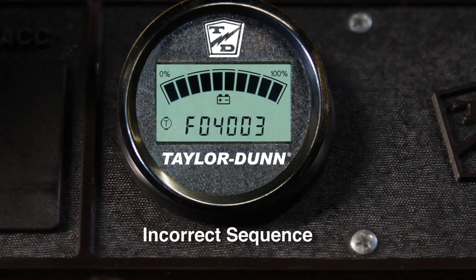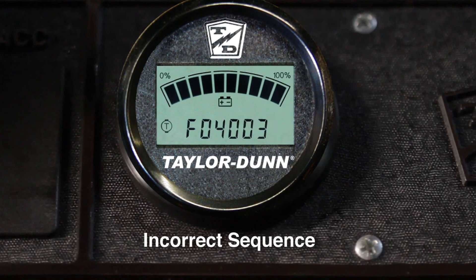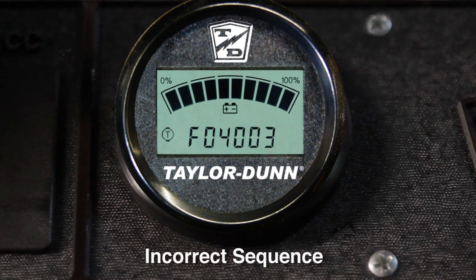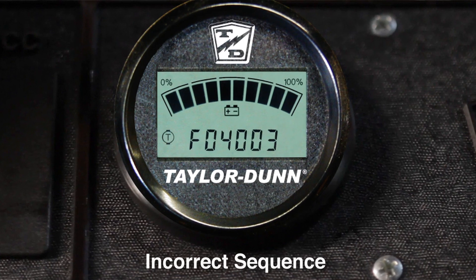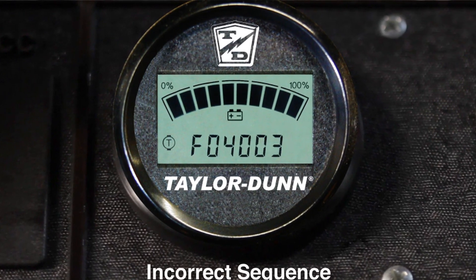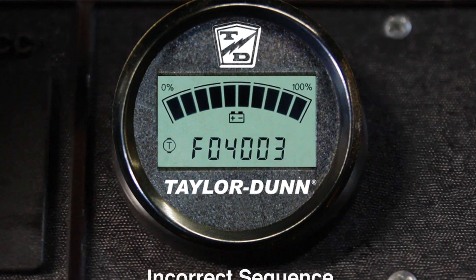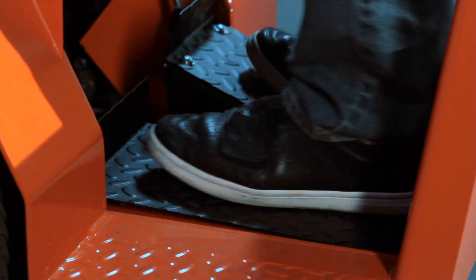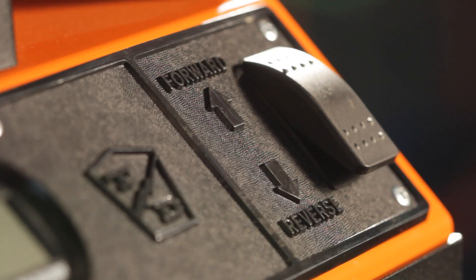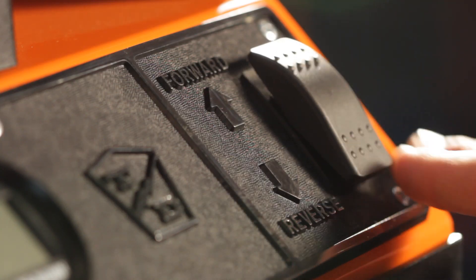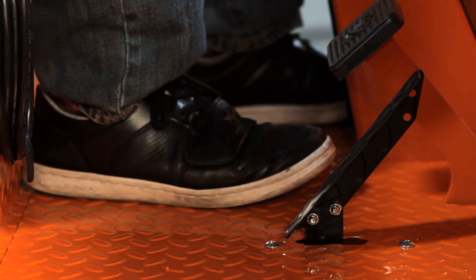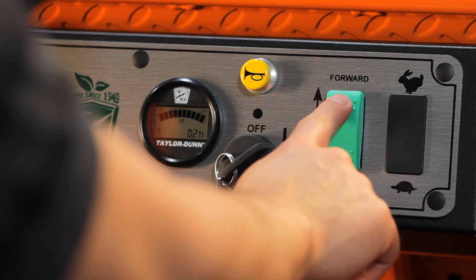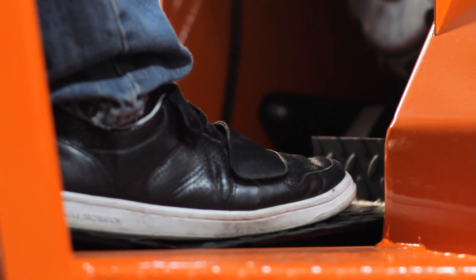Code F04003 is an incorrect sequence used to start the vehicle. The vehicle will not run. To clear the code, properly sit or stand in the driver's position. Set the directional switch in the center and let up on the accelerator pedal. To drive, select a direction, then press the accelerator pedal.